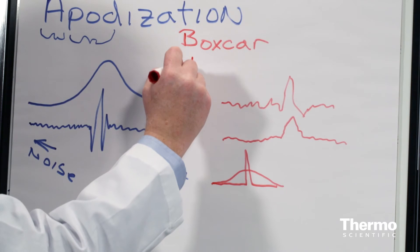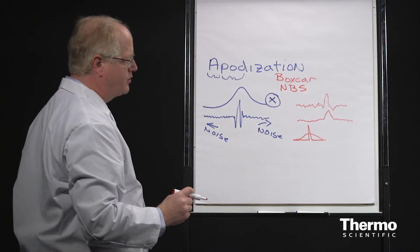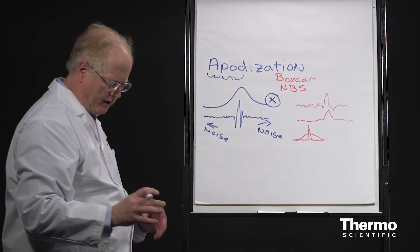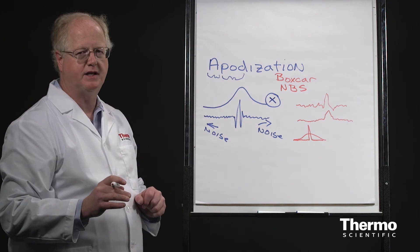We'll look at the Norton Beer Strong and the Norton Beer Weak, and then we'll also look at even the heavier ones. So as we look at those different apodization functions, you'll see how they affect the spectrum.